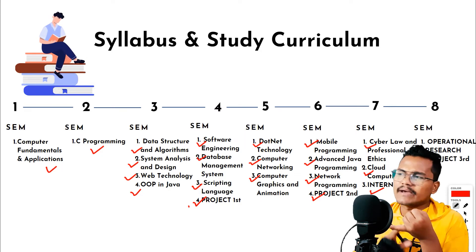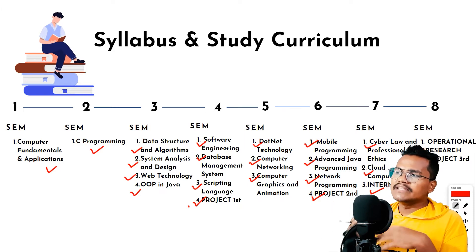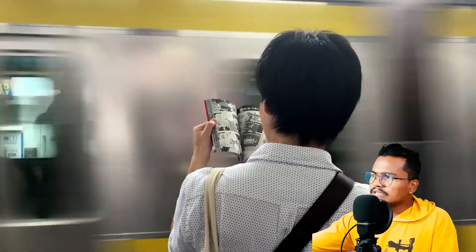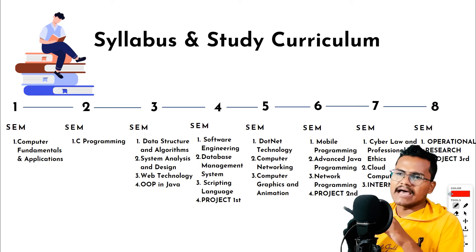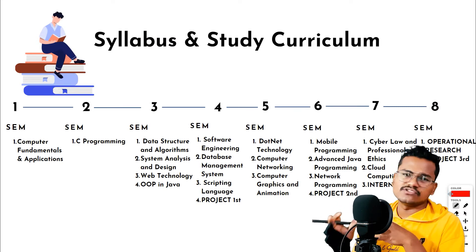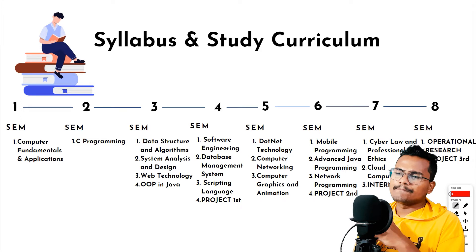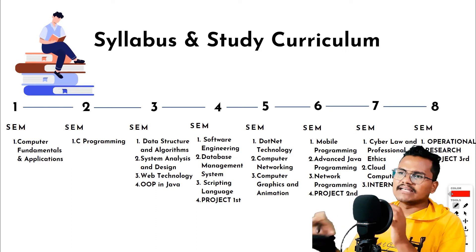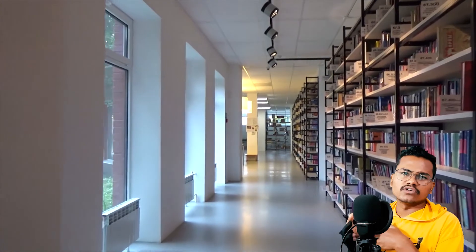From around the sixth semester, elective subjects are available — including Artificial Intelligence, Computer Architecture, Operating Systems, Distributed Systems, and Mobile Computing. Different universities offer slightly different elective options. Web Technology appears across multiple semesters, covering web frameworks and development skills extensively.